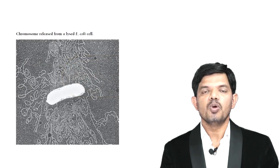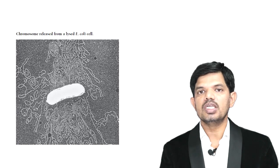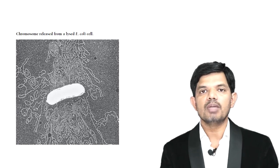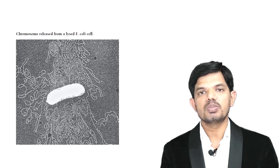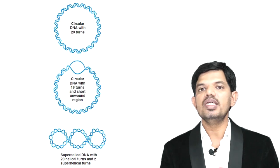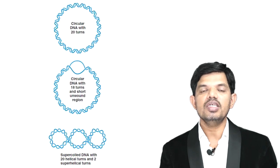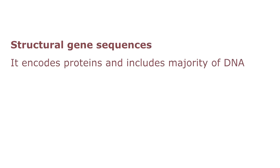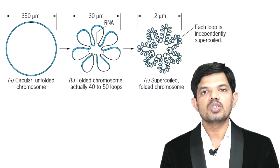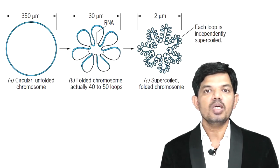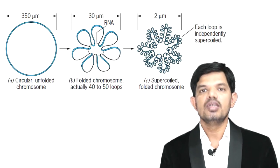The prokaryotic cell has a smaller size, and as we've seen, E. coli contains a 4.6 MB genome. This huge size is able to fit within the small size of the bacteria because of its supercoiled nature. The DNA undergoes coiling, and this extra coiling is called supercoiling. A typical bacterial chromosome contains a few thousand different structural gene sequences that encode proteins, while non-transcribed DNA between adjacent genes is termed the intergenic region. In E. coli, this DNA is folded approximately 10,000 times within the bacterial cytoplasm.